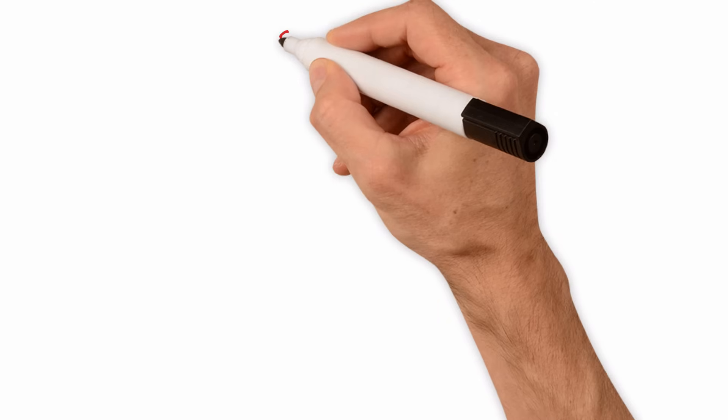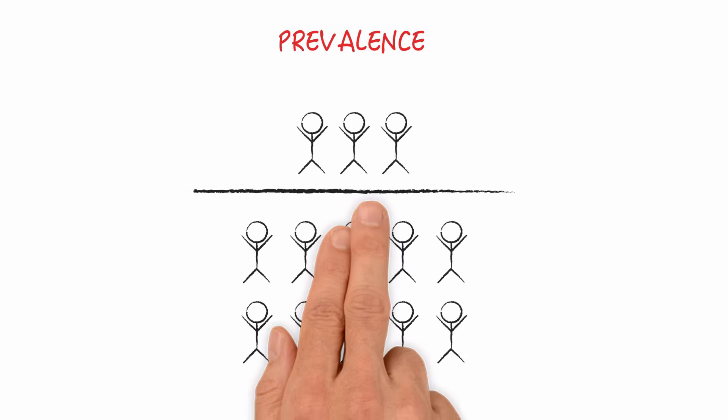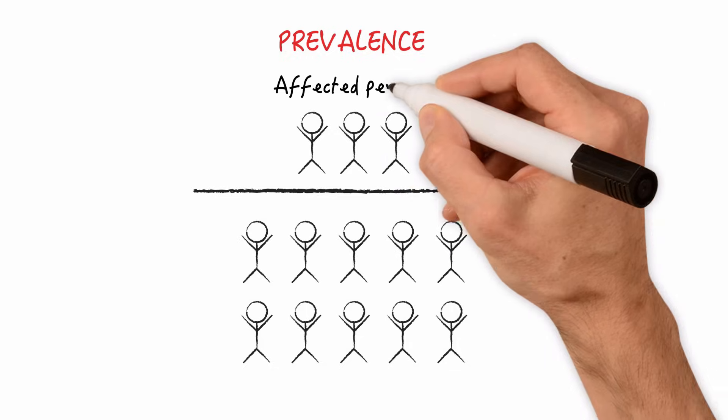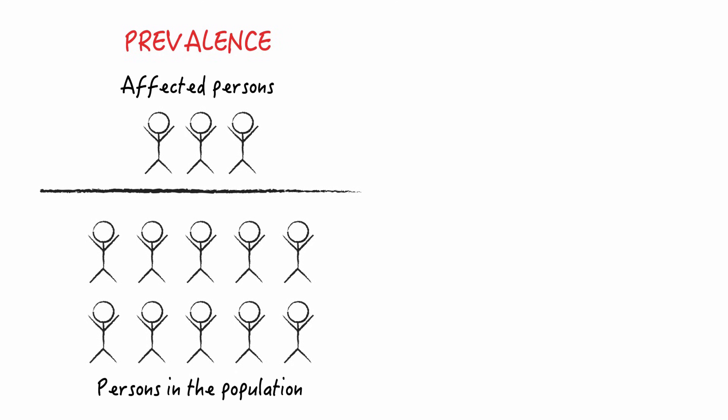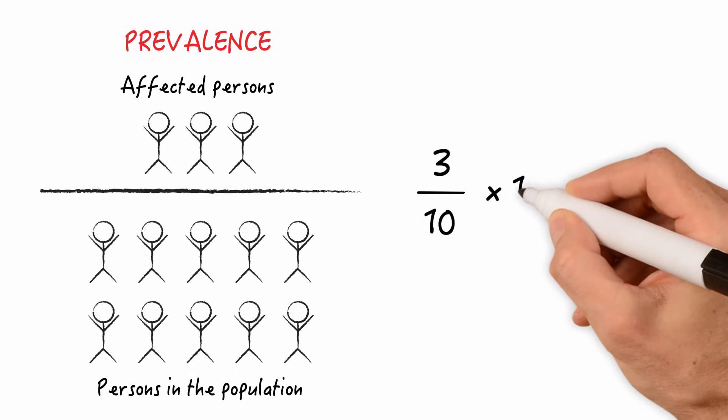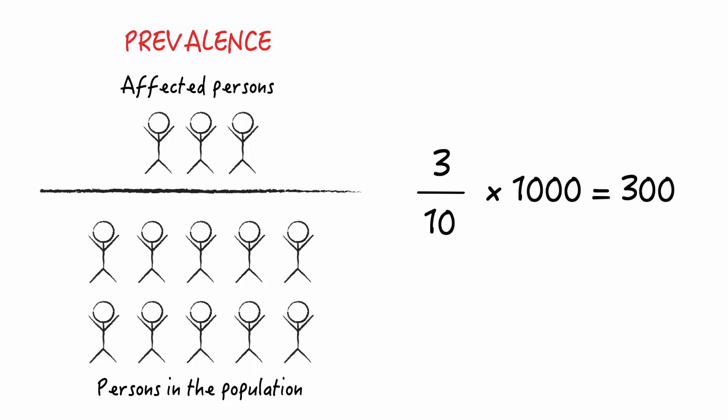Now what about prevalence? Prevalence is defined as the number of affected persons in the population divided by the number of all persons in that population at a specific point in time. So in this fictitious example it would be 3 divided by 10 times 1000 which would mean that we have a prevalence of 300 per 1000 population.